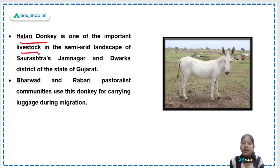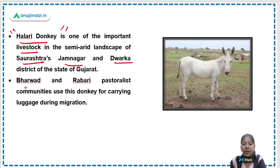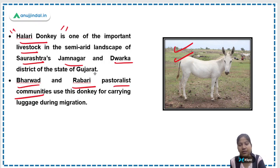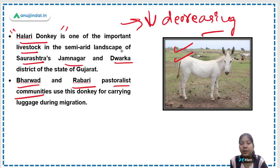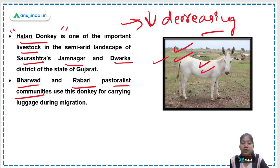The Halari donkey is an important livestock in the Saurashtra region of Gujarat, particularly in Jamnagar and Dwarka districts. The Bharad and Rabari pastoralist communities use this donkey for carrying luggage during migration. However, their population is decreasing due to lack of caretakers, no incentivization in rearing them, and no market opportunity for selling donkey milk.